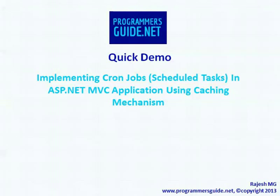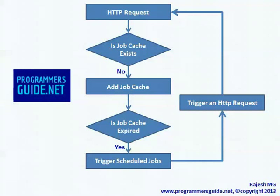Let's have a quick demo on implementing cron jobs in an ASP.NET MVC application using the caching mechanism. When an HTTP request begins, it checks for a job cache. If no job cache exists, it adds a new job cache. If the job cache expires, it triggers the scheduled jobs and also triggers a new HTTP request.